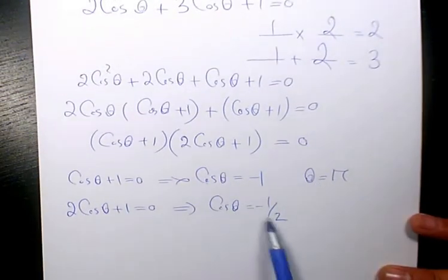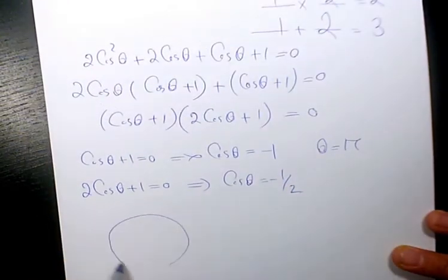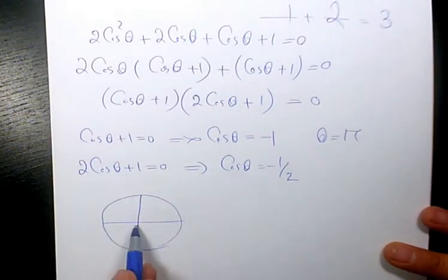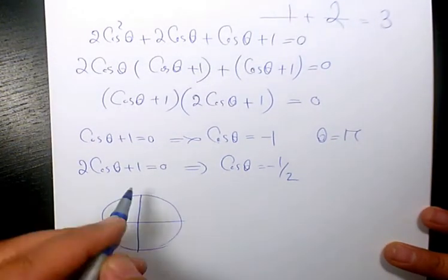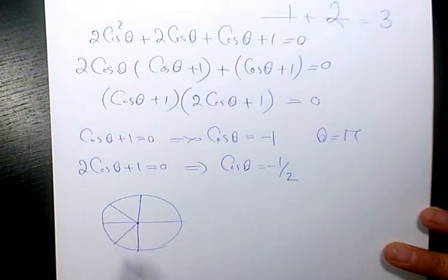Here, cosine theta is negative 1 over 2. Since it's negative, it means that the theta must be in quadrant 2 and also quadrant 3.